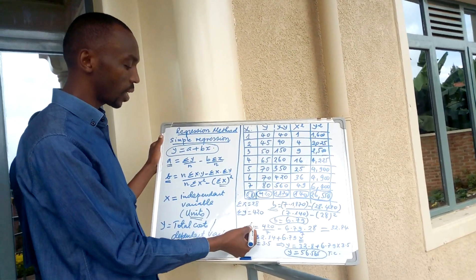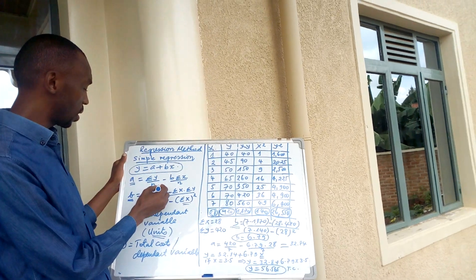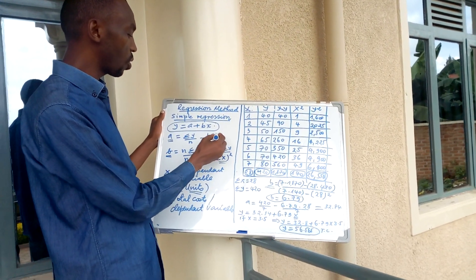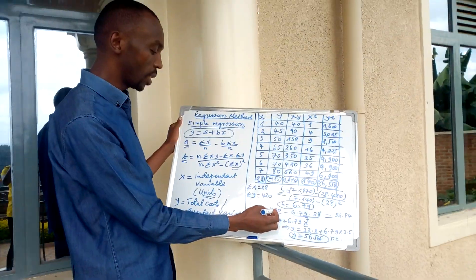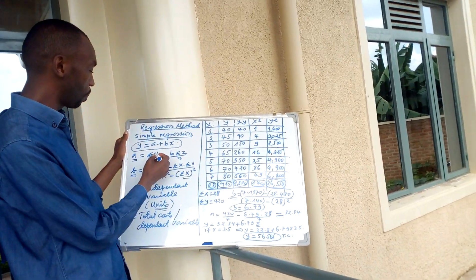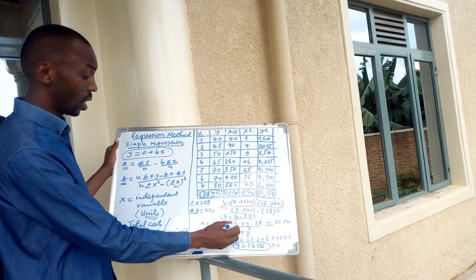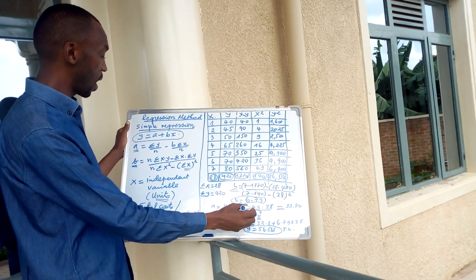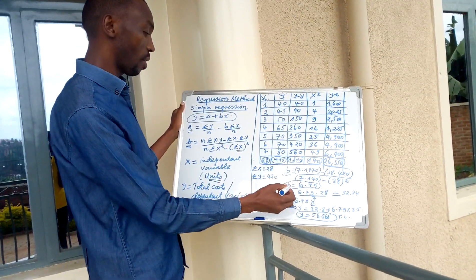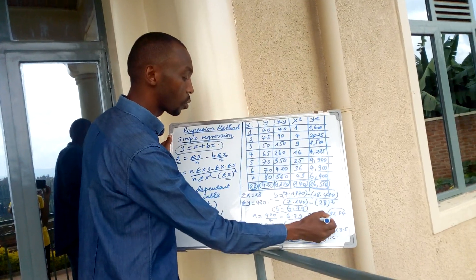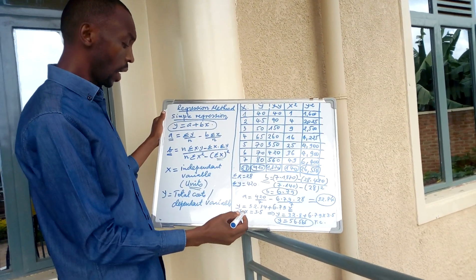To calculate a, using the formula: a equals the summation of y over n, minus b times the summation of x over n. Replacing the values: 420 divided by 7, minus 6.79 (our calculated b, the variable cost per unit) times 28 divided by 7. This gives us a equals 32.87. We say a is the fixed cost component of our total cost equation.